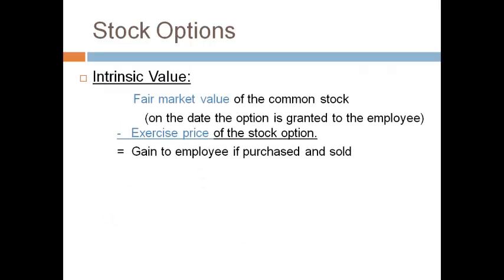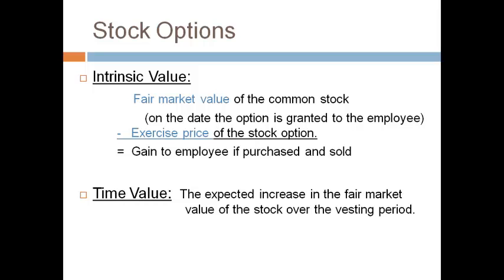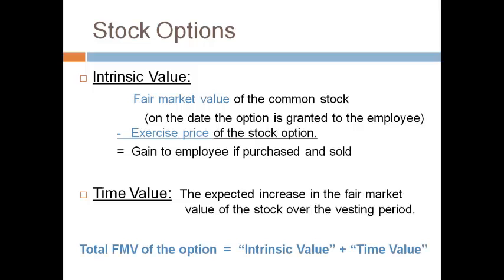The total fair market value consists of two parts: the intrinsic value and the time value. Intrinsic value is the difference between the exercise price and the fair market value of the common stock at the time of the grant. It would be the gain the employee would earn if they immediately purchased the common stock for the exercise price and sold it at fair market value. The time value is the expected increase in the price of common stock over the vesting period — the time the employee has to work to earn the options. The total fair market value of the stock option is equal to the intrinsic value plus the time value.